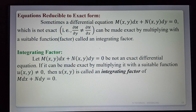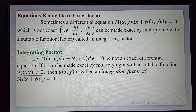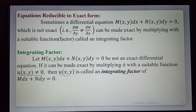Definition: Let m dx + n dy = 0 be not exact. If it can be made exact by multiplying it with a suitable function u(x, y) ≠ 0, then that multiplying function u(x, y) is called the integrating factor of the given equation m dx + n dy = 0.